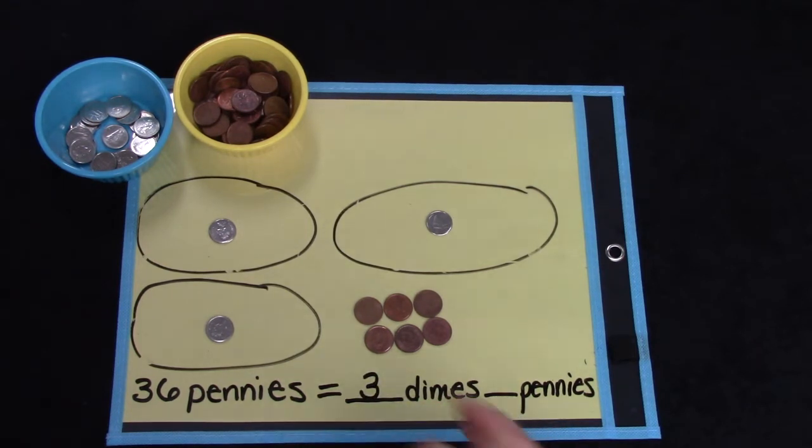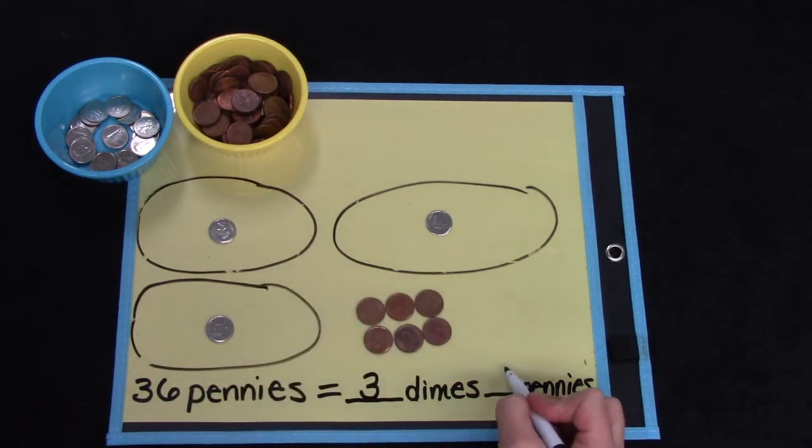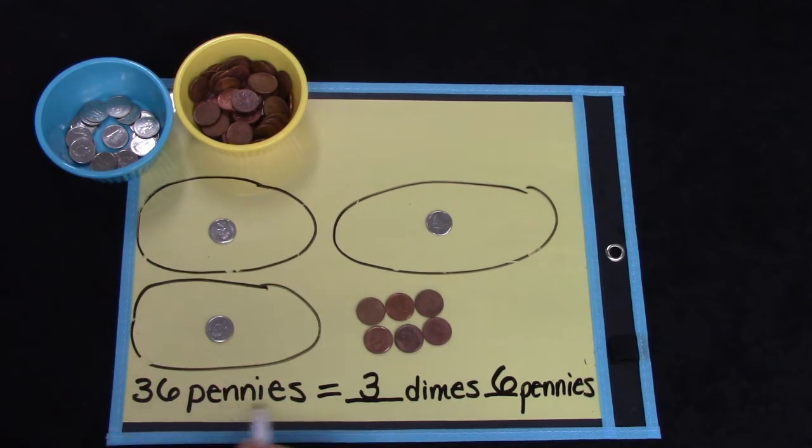How many pennies? 2, 4, 6. Is that enough to trade for another dime? It's not, is it? 36 pennies equals 3 dimes and 6 pennies because the 3 is in our tens place and that tells us how many groups of 10 or how many dimes and the 6 is in the ones place and that tells us how many ones or how many pennies.